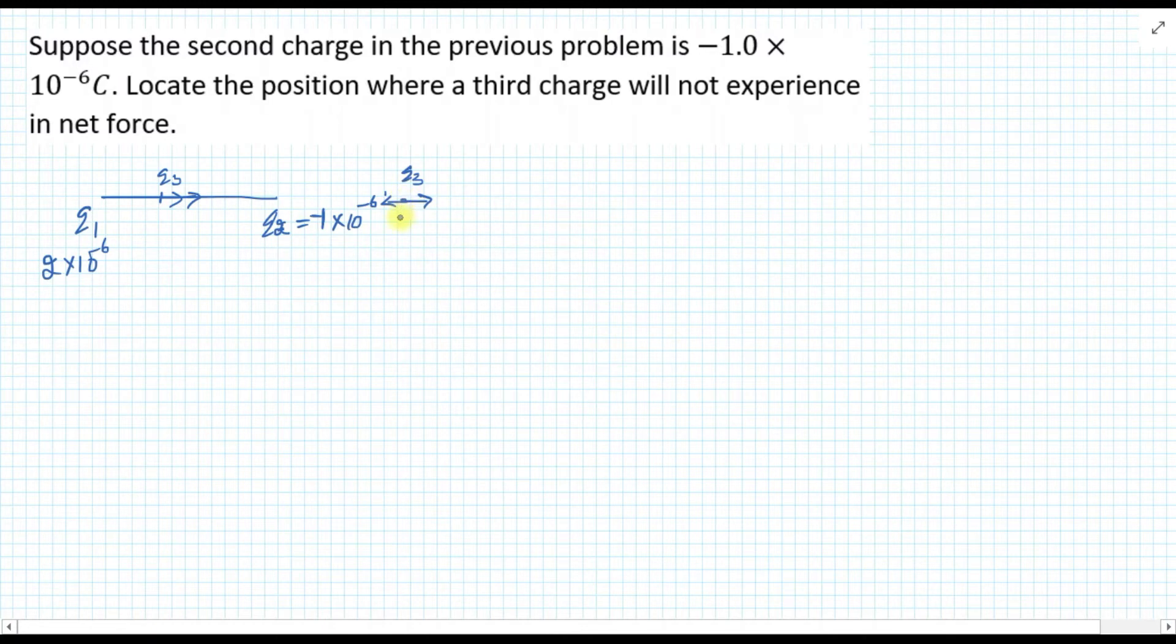The net force will be zero if the magnitude of these two are the same. Let's say here we have Q2 and Q3 at distance x from Q2. And we know that the distance between Q1 and Q2 is 10 cm. This was given in the previous question. So my position of Q3 is going to be in the right of Q2.